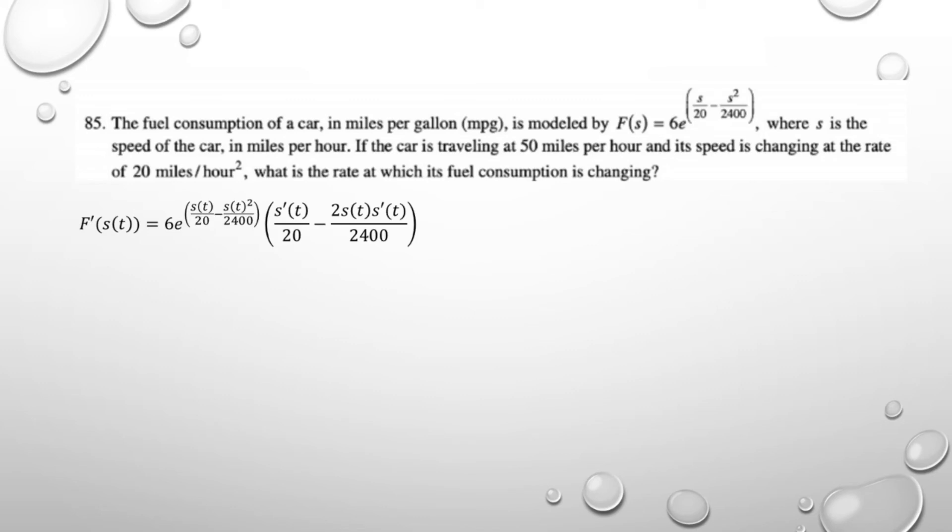Now we need to figure out what we need to plug in for S of T and S prime of T. It says that if the car is traveling at 50 miles per hour, so that 50 miles per hour is S of T.